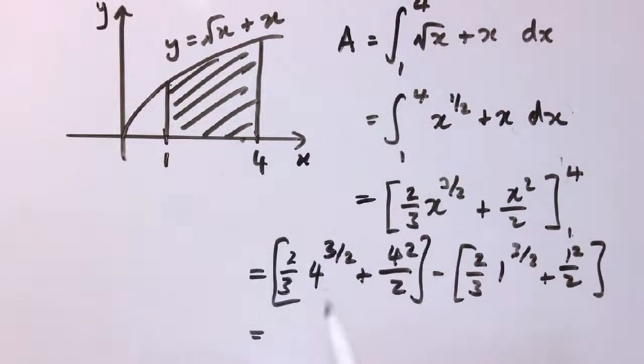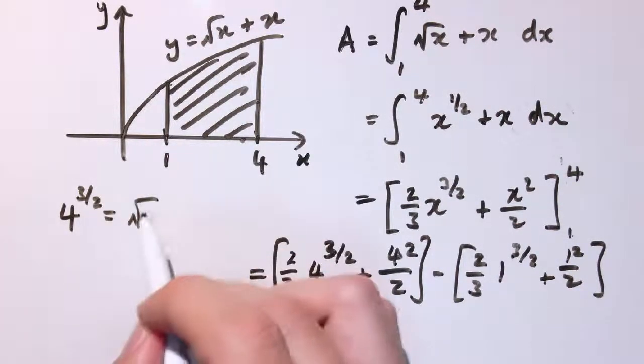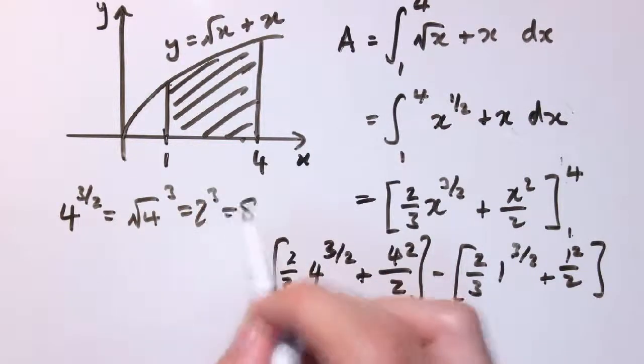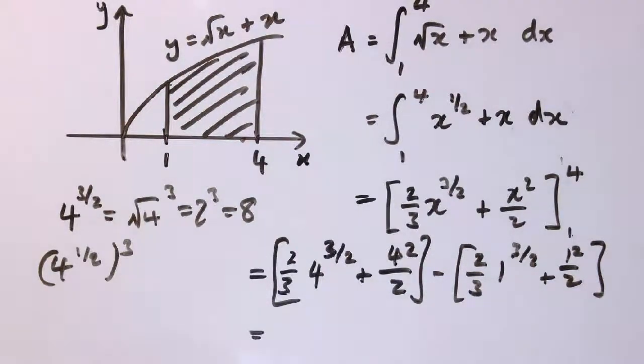So now, let's think about what these numbers are then. 4 to the 3 over 2, that's the square root of 4 cubed, which is 2 cubed, which is 8. Writing 4 to the 3 over 2 is 4 to the 1 half cubed. So that's 8, so that's 2 thirds times 8, so that's 16 over 3. This is 4 squared, which is 16 over 2, which is 8. And then I'm going to subtract, well, 1 to the 3 over 2, and that's just 1.